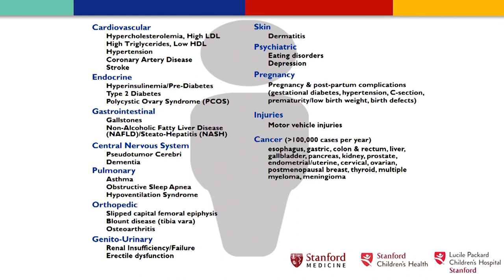For those interested in cancer: projections now indicate that by the middle of this century, obesity will overtake tobacco as the number one cause of cancer globally. More surgical complications, difficulty with anesthesia, all of this leading to premature death and shorter lifespans. This may be the first generation that lives a shorter lifespan than the prior generation, mainly because of the obesity epidemic.